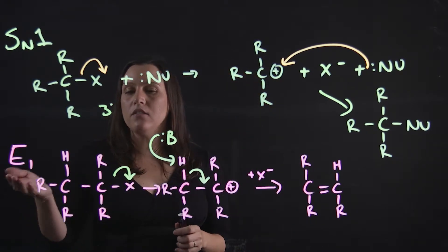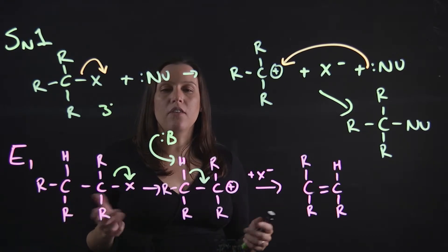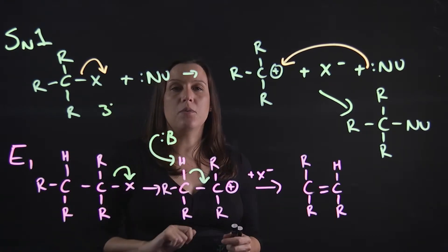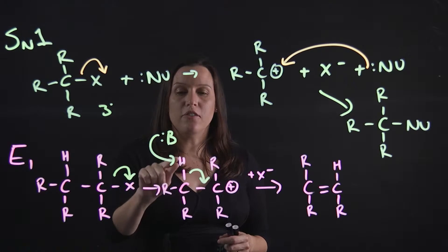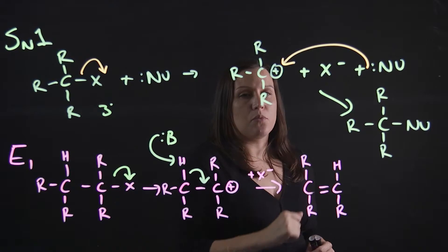With our E1, we firstly again have the X or leaving group leave. The base comes in, deprotonates that beta hydrogen, and then we get those electrons moving in, and we get our double bond.